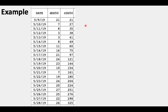Here's an example with codling moth. We had set a biofix that year of May 9th. You can see the daily degree days base 50 and the cumulative degree days base 50. We started with 21 degree days. The next day there were 7, so 21 plus 7 gives about 27 cumulative — there were just some rounding errors from decimal points. You can see the cumulative is always increasing as you're adding more degree days.